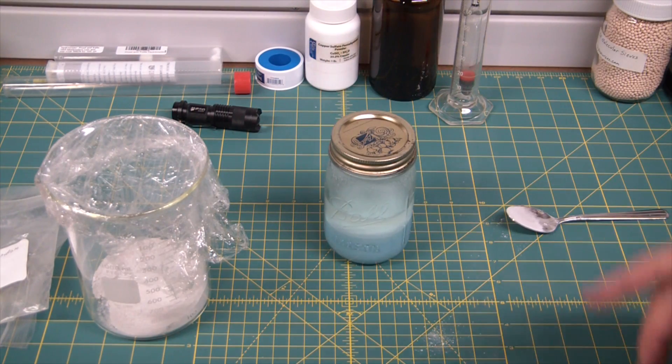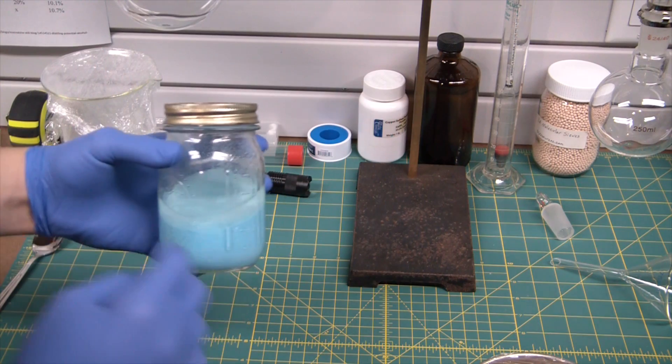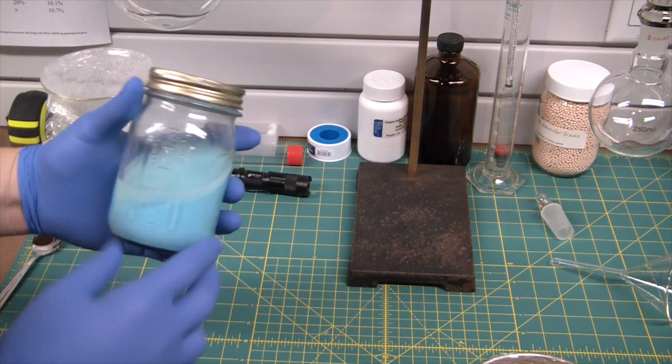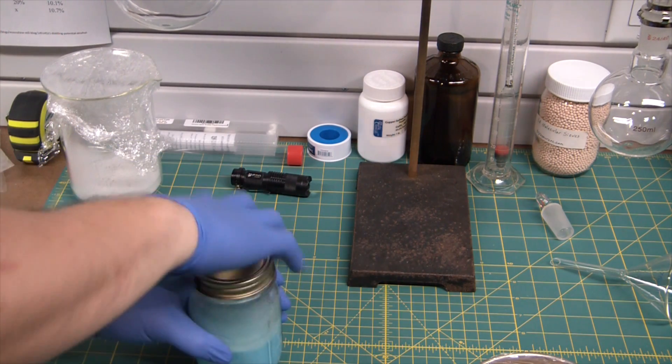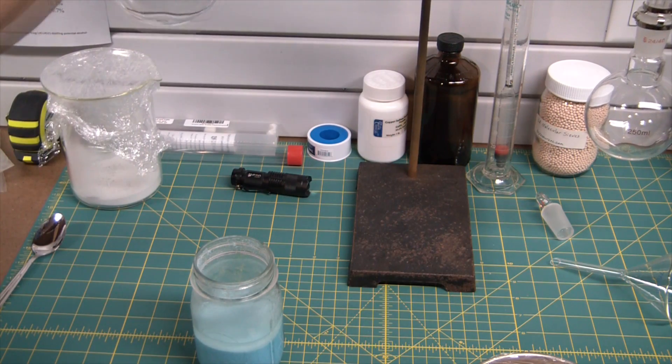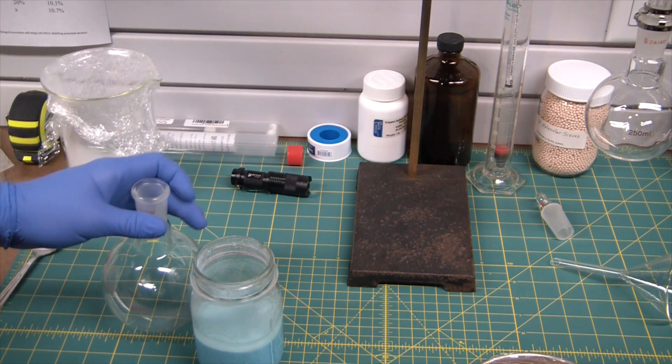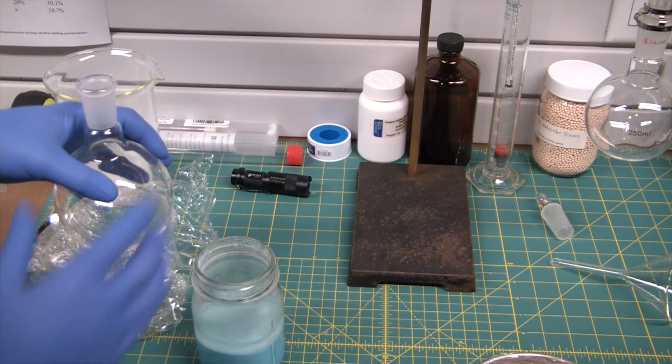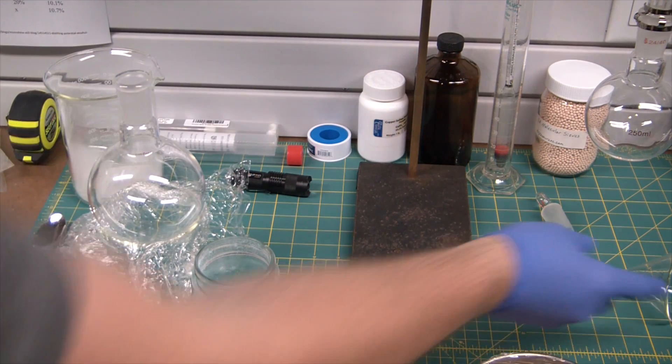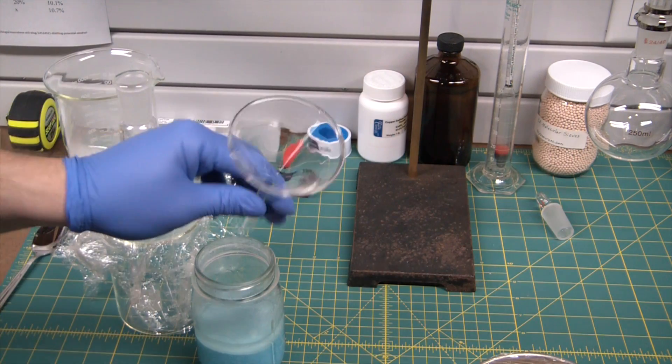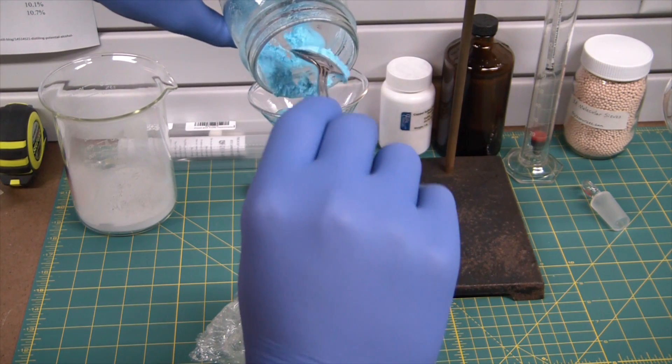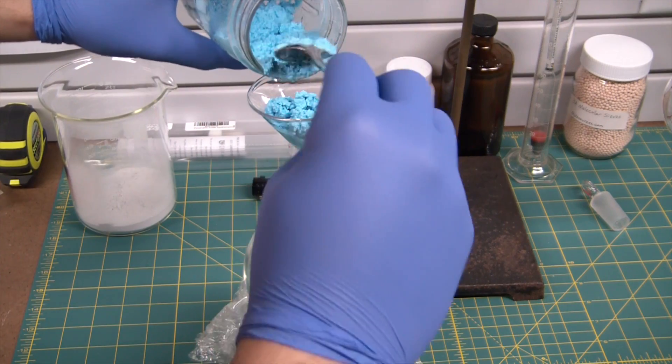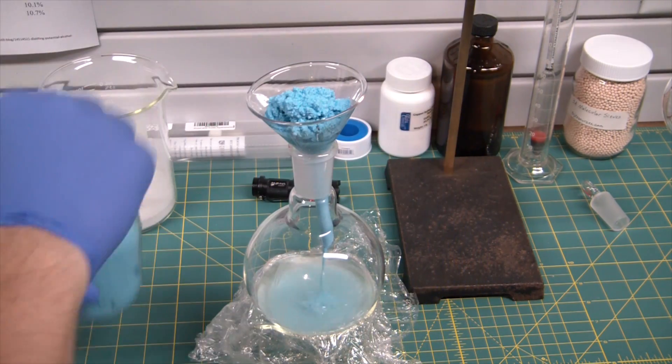All right, so it's been about 24 hours since I added the anhydrous copper sulfate to the ethanol-water mixture, and now I'm going to add that to a 500 milliliter round bottom flask. Use a little saran wrap there, that way it sticks nicely, won't move on us. I should have a bigger funnel. So a lot of the ethanol is also going to be trapped between the copper sulfate particles, so I'm going to have to kind of force them down into the funnel.